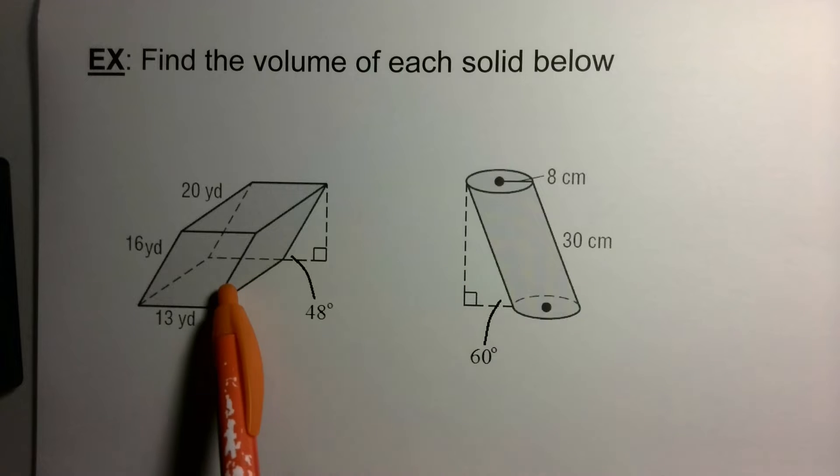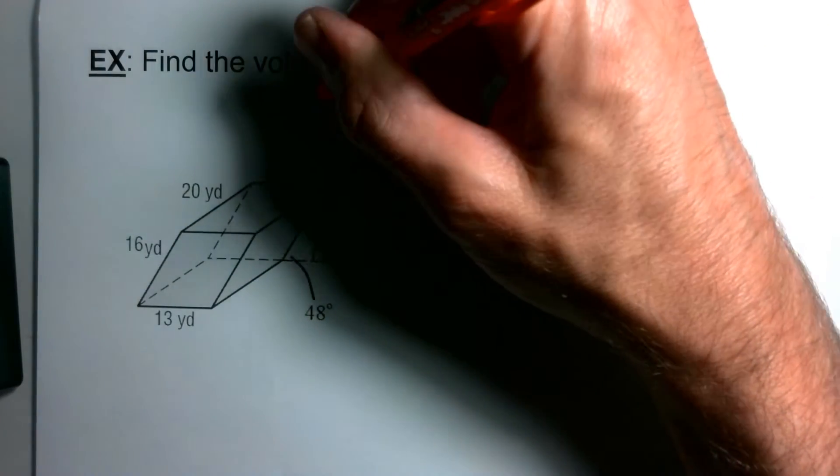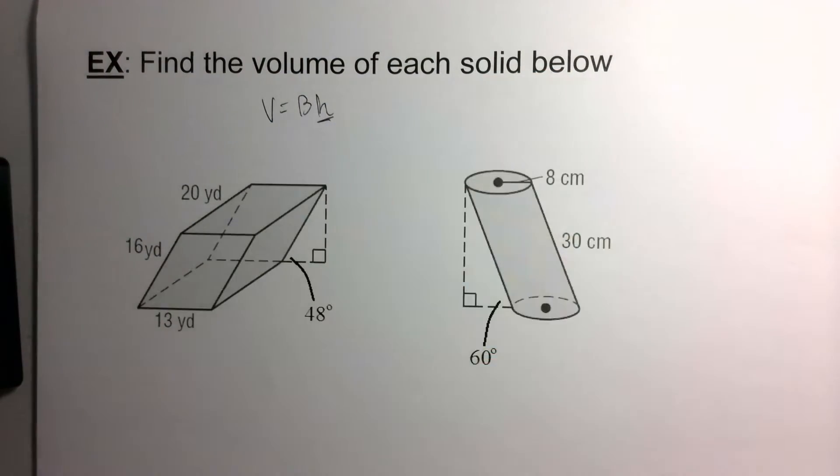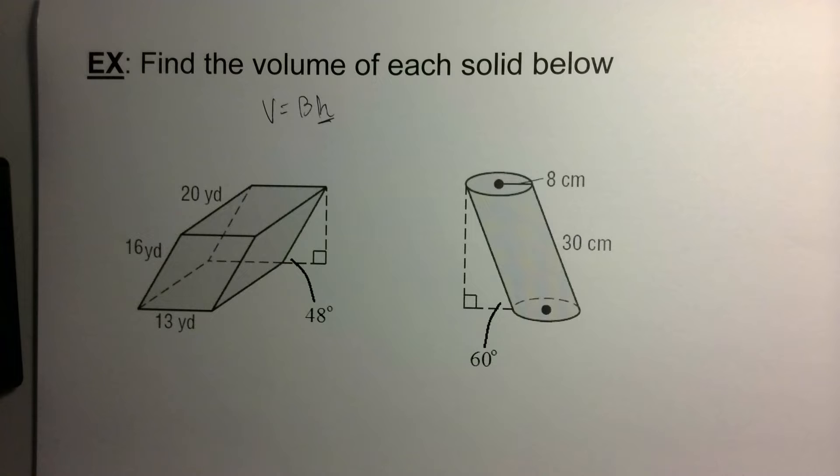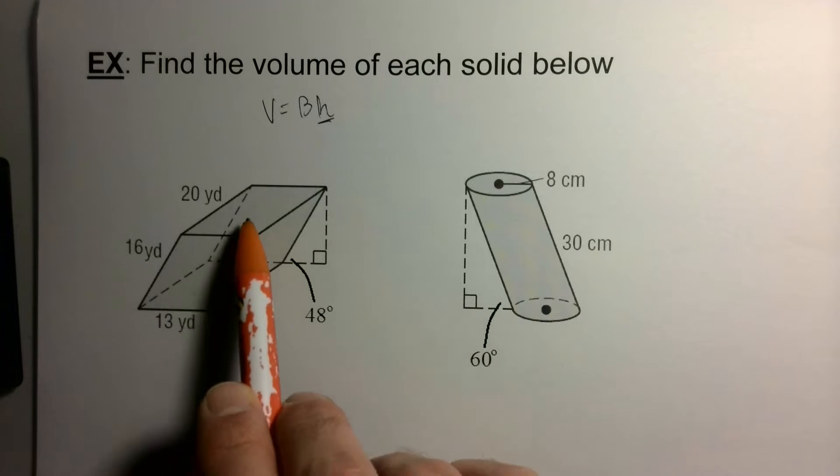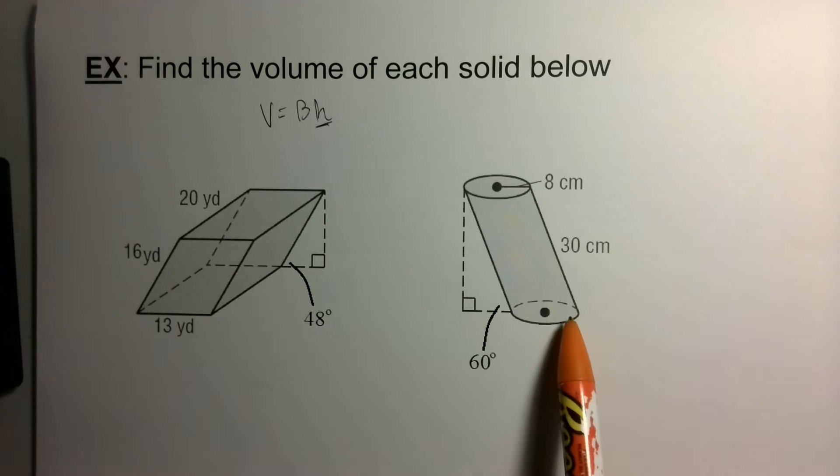Here I have two oblique solids. Again, oblique means they're slanted. The volume formulas are still the same - volume is still area of your base times your height. The tricky part on these oblique problems is usually finding that height. This one here on the left should be a rectangular prism because my bases are rectangles.